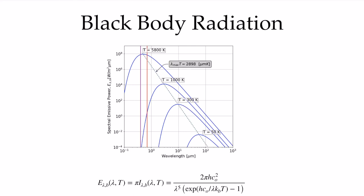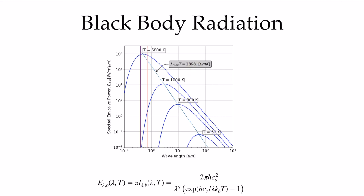If we connect the lines joining the maximum of each curve at each temperature, a very nice relation emerges: the wavelength where the maximum emissive power occurs multiplied by the temperature equals the constant 2898 micrometers·Kelvin. That is Wien's displacement law; it enables you to calculate the wavelength of maximum emissive power for any given temperature.